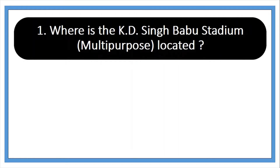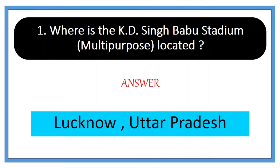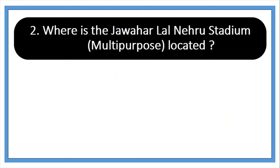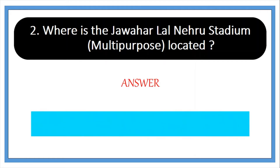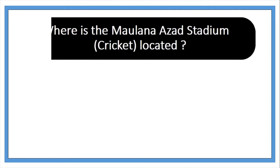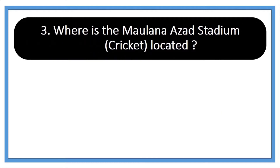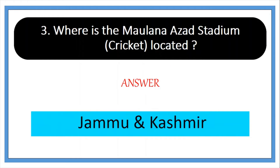First question: where is the Keydaeen Bagu Stadium (multipurpose) located? Answer: Lucknow, Uttar Pradesh. Second: where is the Jawaharlal Nehru Stadium (multipurpose) located? Answer: Kochi, Kerala. Third: where is the Maulana Azad Stadium (multipurpose) located? Answer: Jammu and Kashmir.